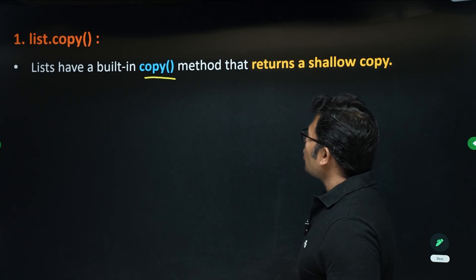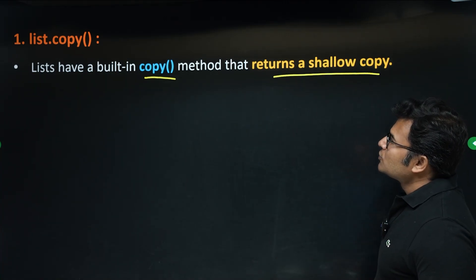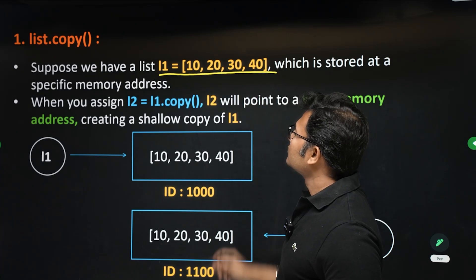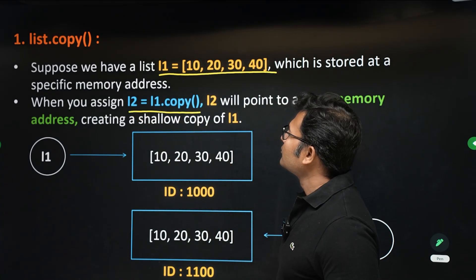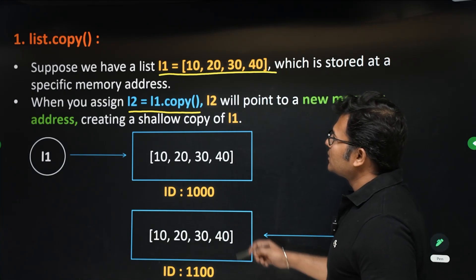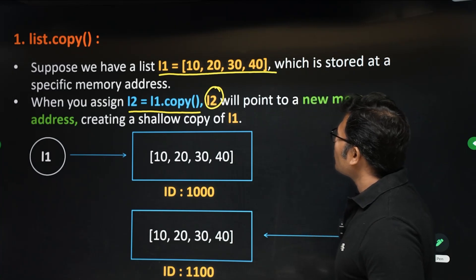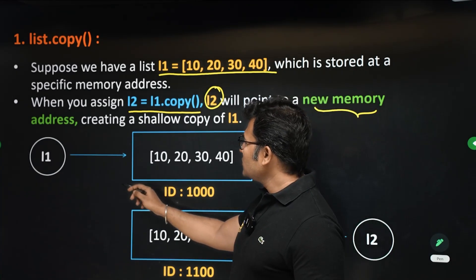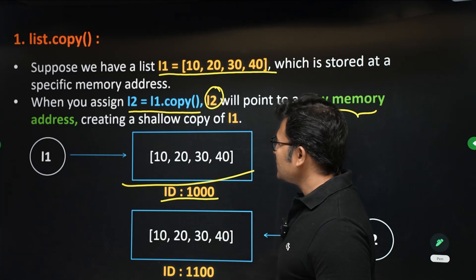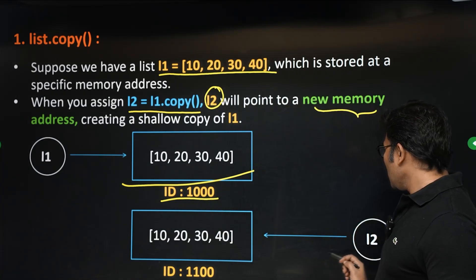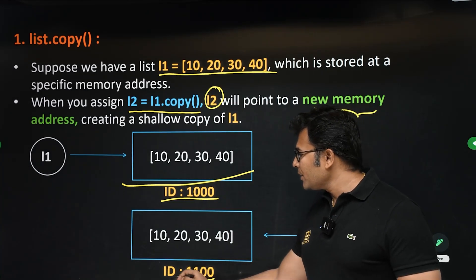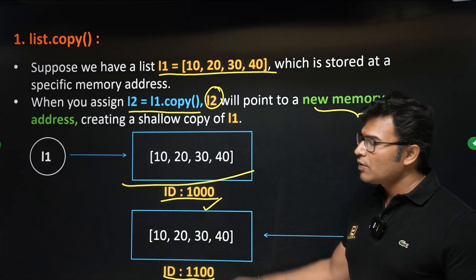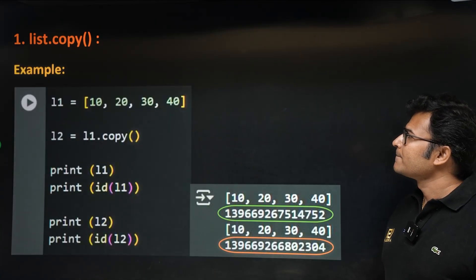The list has a built-in copy method that returns a shallow copy. For example, l2 equal to l1.copy() — in this case a new list for l2 is created, and l2 will be provided with a new memory address. It will be a completely new copy at a different memory location. Changing one will not change the other. This is called shallow copy.